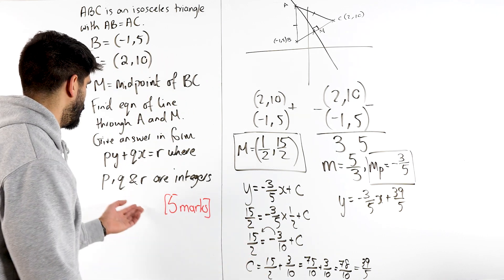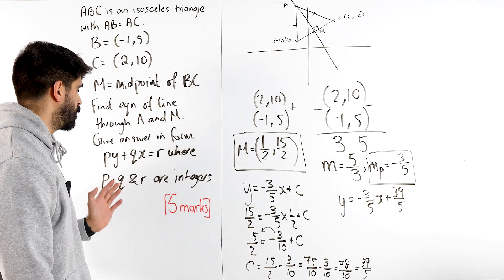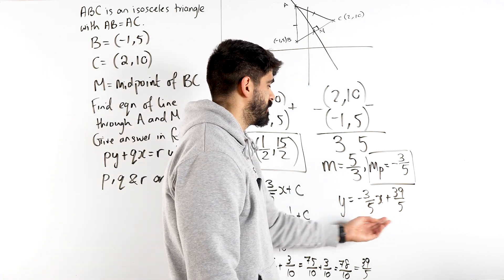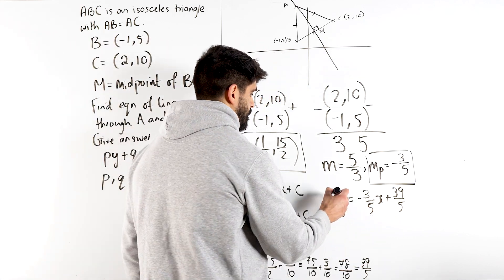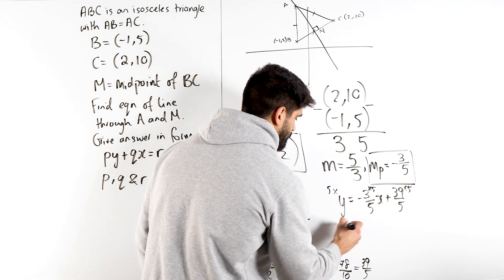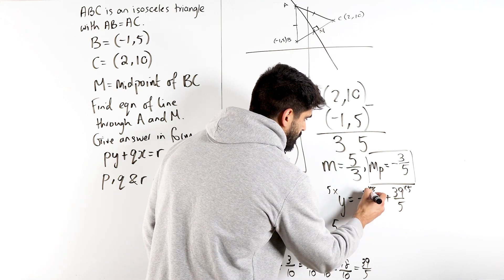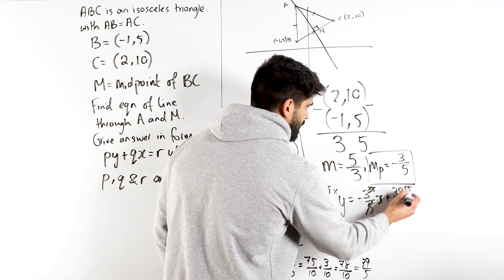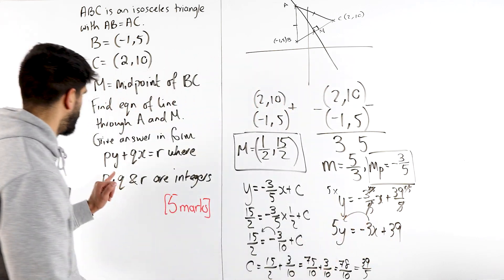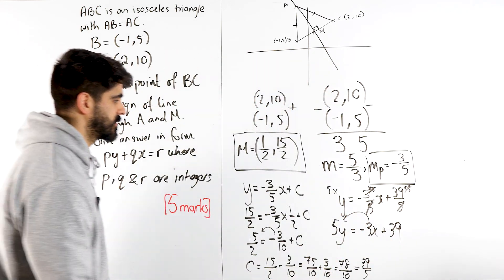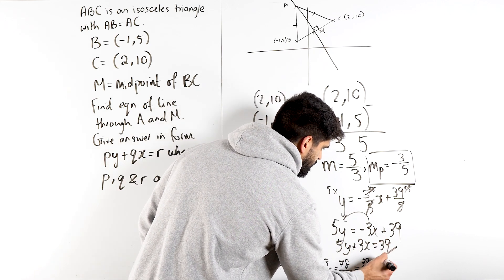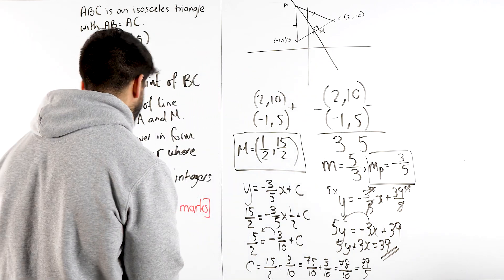So the equation of the line is y is minus 3 fifths x plus 39 over 5. And we're not even done yet because the form they want it in is py plus qx is r, where p, q and r are integers. These are not integers, these are rational numbers. Integers mean we need to times through by 5. So we're going to times through by 5, get rid of those over 5s. So we get 5y is minus 3x plus 39. And then you add the 3x over, because look at the form py plus qx. So we get 5y plus 3x equals 39. Horrible.